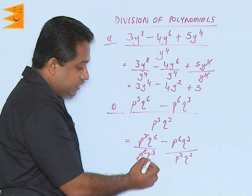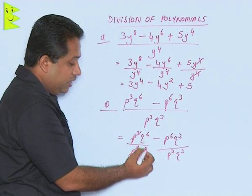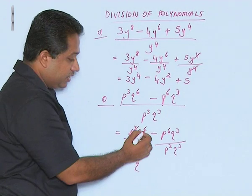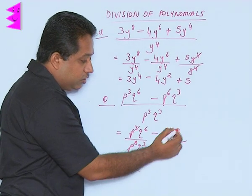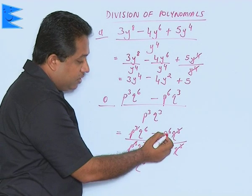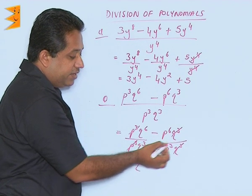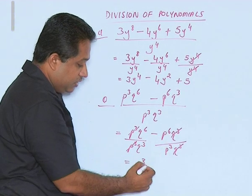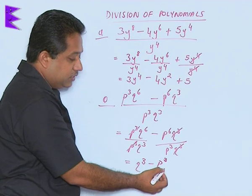Now we find that p³ is the same in the first term, so we can cancel that out, leaving q⁶ upon q³. This is in the form x^a upon x^b — the base is the same and it is division, so powers are subtracted: 6 minus 3 gives 3. In the second term, q³ cancels out, and we have p⁶ upon p³; subtracting powers, 6 minus 3 gives 3. So the final answer is q³ - p³.